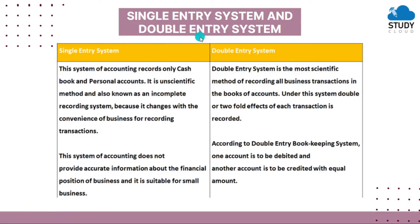We will see the comparison between single entry system and double entry system. The single entry system of accounting records only the cash book and personal accounts. It records only cash transactions — what cash is coming into the business and what cash is being paid — and personal accounts of individual people.